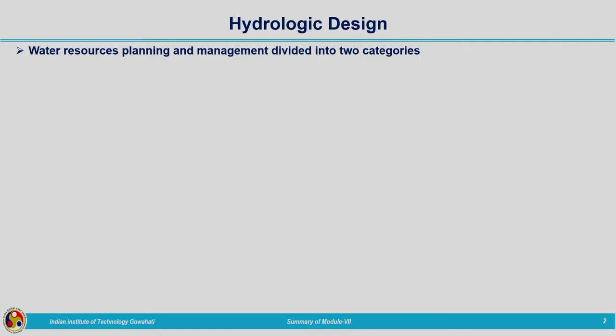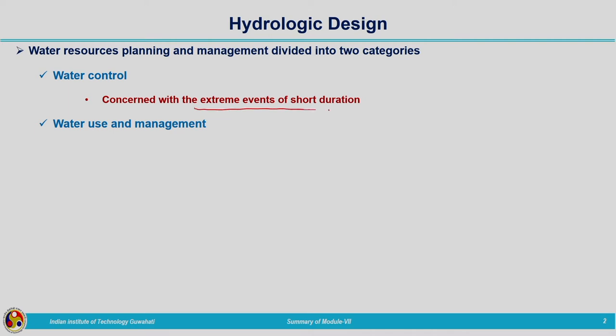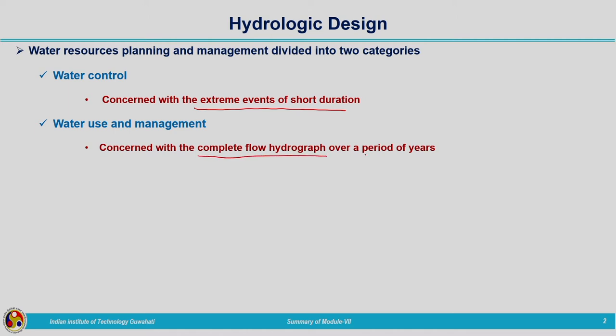When we were discussing about water resources planning and management, it is divided into two categories. Our aim was looking into two directions related to water control and water use and management. Water control is concerned with the extreme events of short duration, and water use and management is concerned with the complete flow hydrograph over a period of years. For the design related to these two categories we will be making use of two different data: one related to extreme events, and the other related to complete data for many years.